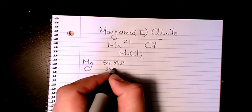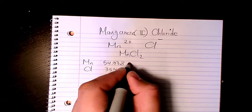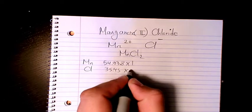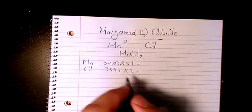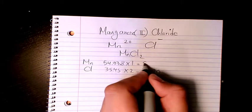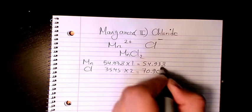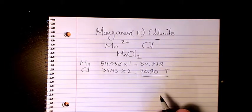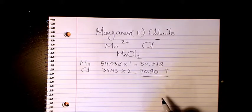And chlorine is 35.45. So we have one atom of manganese and we have two atoms for chlorine, that's 70.90. And here we have 54.938. Then I need to add them together. That makes it 70.90 plus 54.938.